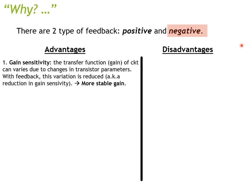The first advantage is gain sensitivity. The transfer function or gain of an amplifier circuit can vary due to changes in transistor parameters. In order to stabilize this gain, you can use feedback — the feedback circuit can help reduce the variation and therefore stabilize your gain.